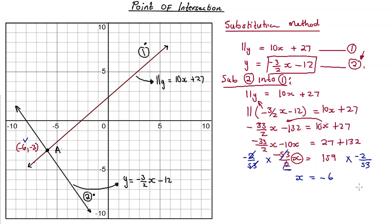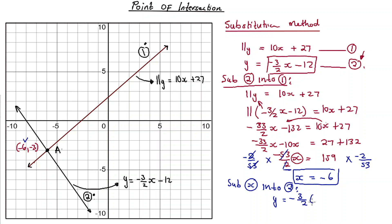Now let's calculate y. Since I have the value for x, I can substitute x into equation number two. Where there's x next to the negative 3 over 2 coefficient, I substitute negative 6. So y becomes negative 3 over 2 multiplied by negative 6, minus 12, giving y equals negative 3. The graphical method checks out — my graphs were drawn to scale. Both the graphical method and the substitution method give us A = (−6, −3).